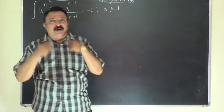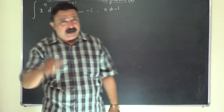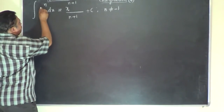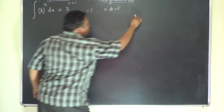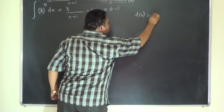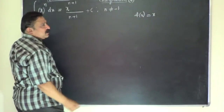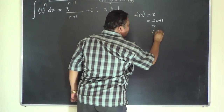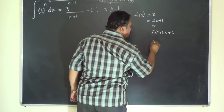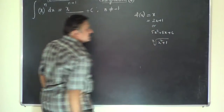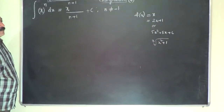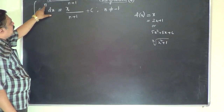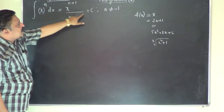In this class I want to discuss more about the power rule and its application for various types of situations. Note that x is algebraic — the given function f(x) is purely an algebraic function. It could be something like 2x plus 1, or 5x squared plus 8x plus 6, or the cube root of x squared plus 1. We are not bringing any trigonometric function here.